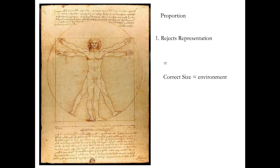Proportion wants to make things the correct size in their environment. Everything has to be the correct size in their environment. Because if they're not, it looks wrong. We go back to our wall and our 40-foot-tall king. If he's taller than the wall, you go, wait — there are no 40-foot-tall people. How big is all this? Is it a play set? What am I looking at?